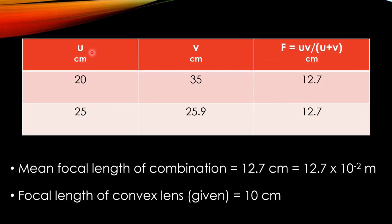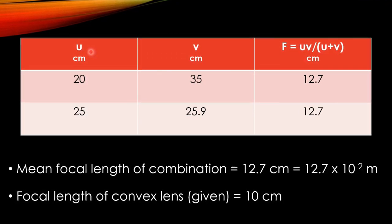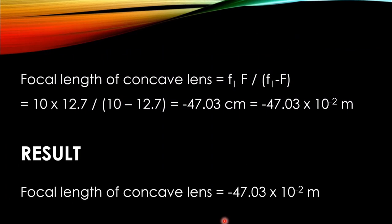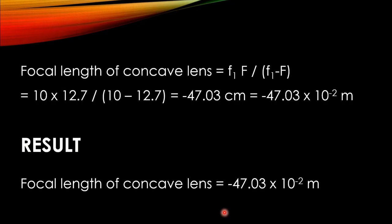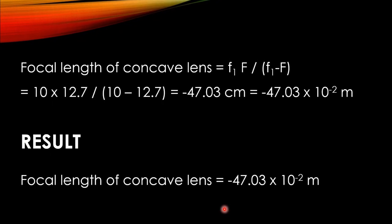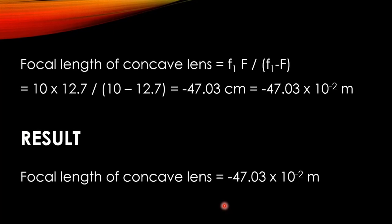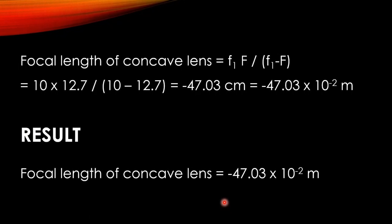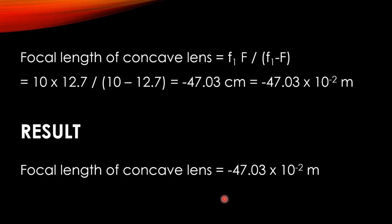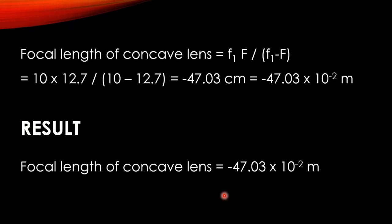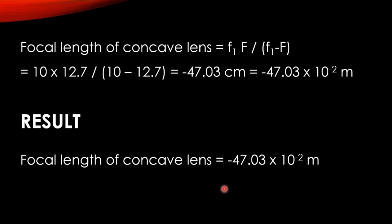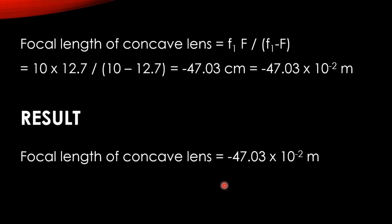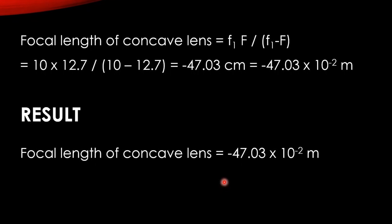The focal length of the convex lens is given as 10 cm. The focal length of a concave lens can be calculated using the formula, F1F divided by F1 minus F. By substituting F1 as 10 cm and F as 12.7 cm, we get the focal length of the concave lens is minus 47.03 cm, that is, minus 47.03 into 10 raised to minus 2 meter.